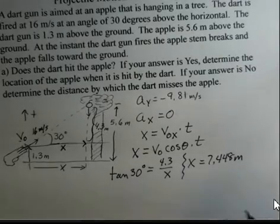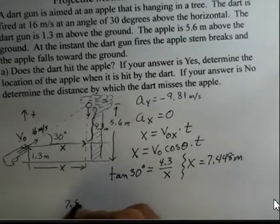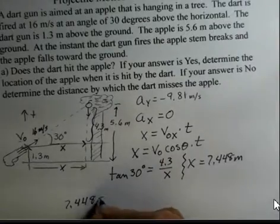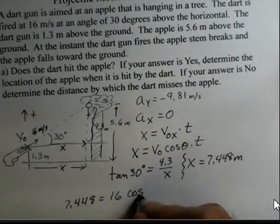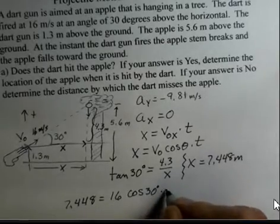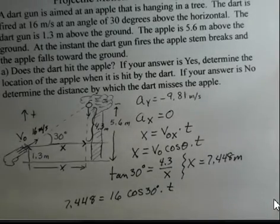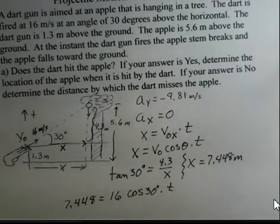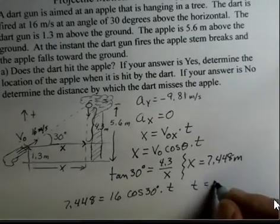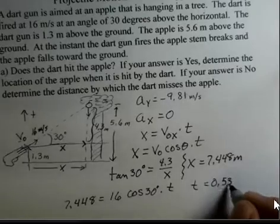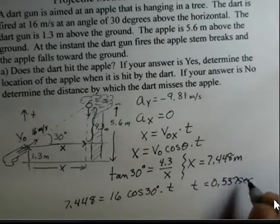We'll have 7.448 equals 16 cosine of 30 degrees multiplied by the time. So we'll be taking 7.448 dividing by 16 divided by cosine 30. And approximately the time is 0.537. We are coming up with a time.